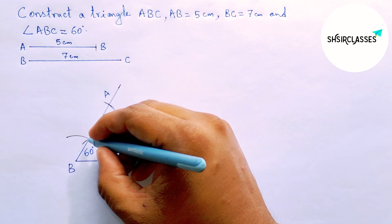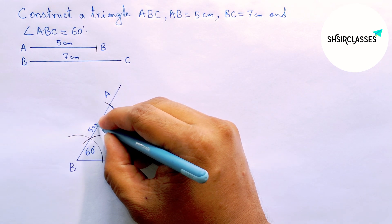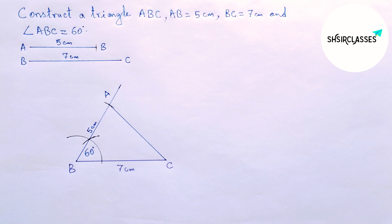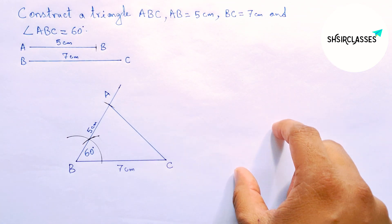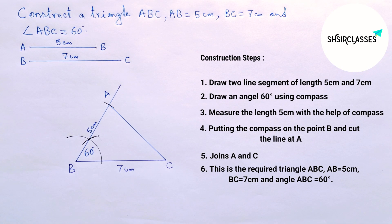AB equals 5 centimeters. This is our required triangle ABC. I will provide all the construction steps. That's all, thanks for watching, please share it.